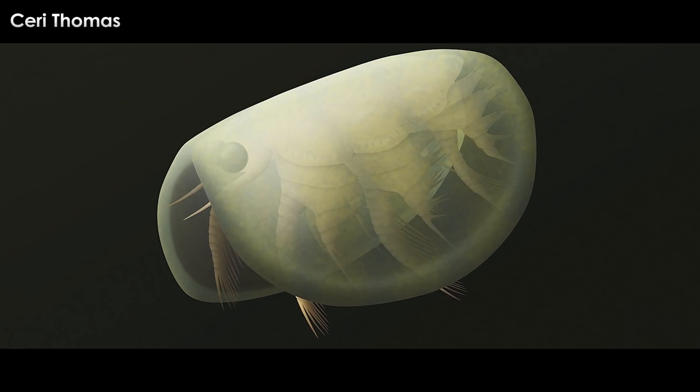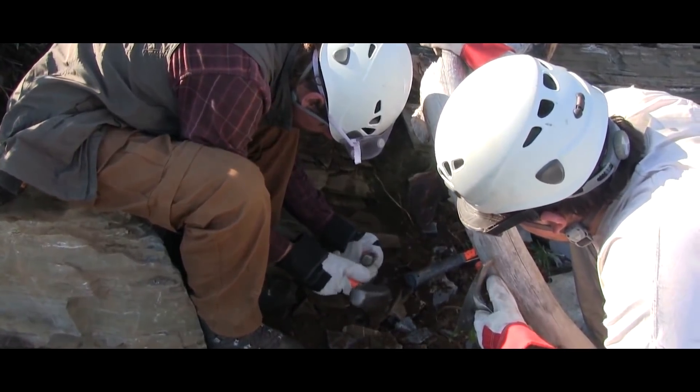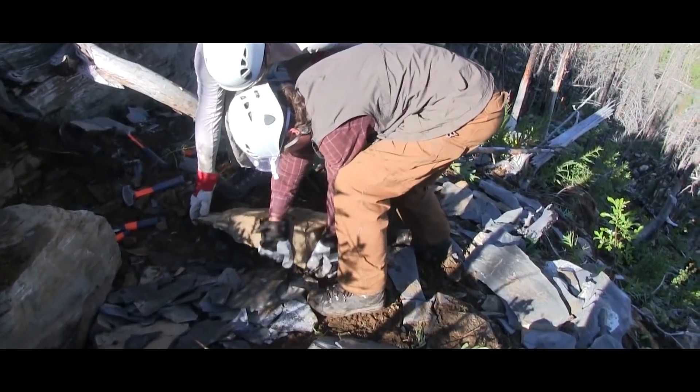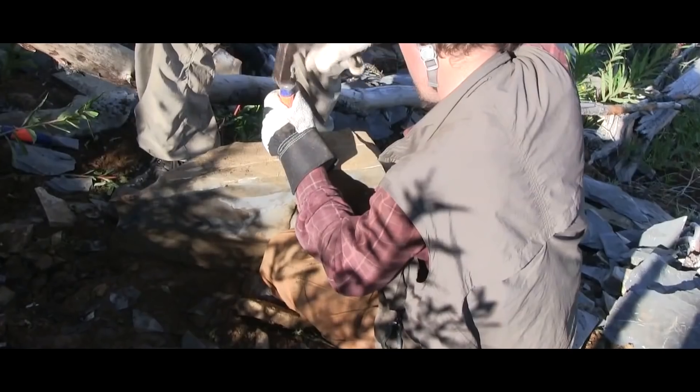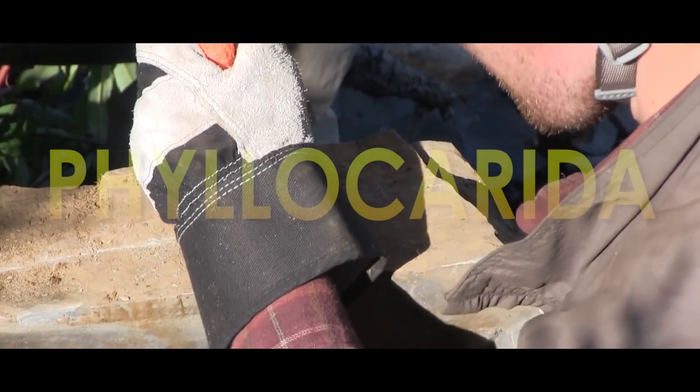Sometimes this two-shelled carapace had a hinge, other times it did not. When they were first being chipped out of the Cambrian-aged rocks of the Burgess Shale, they were considered to be relatives within a group of bivalved arthropods given the name Phylocarida.